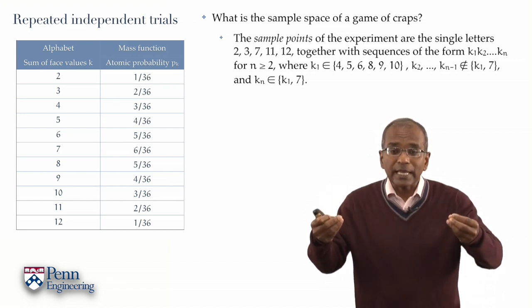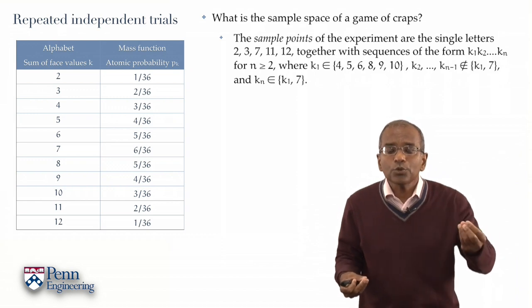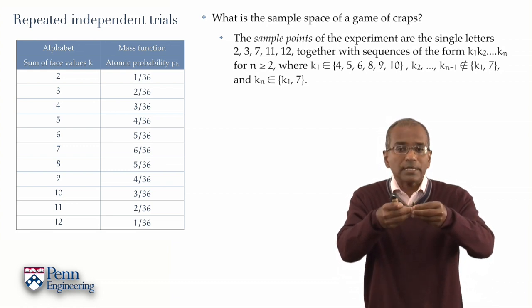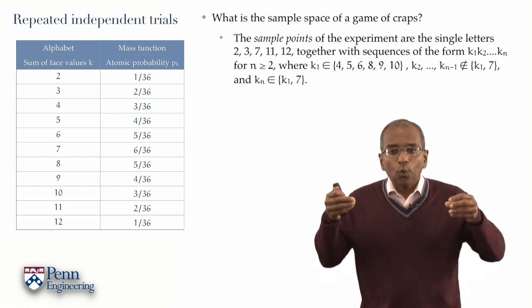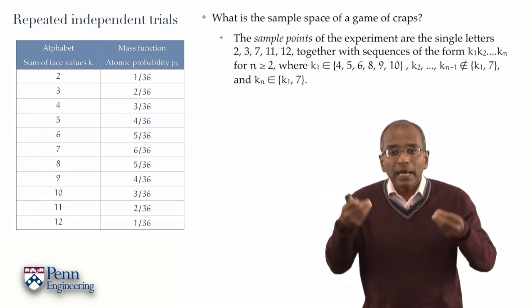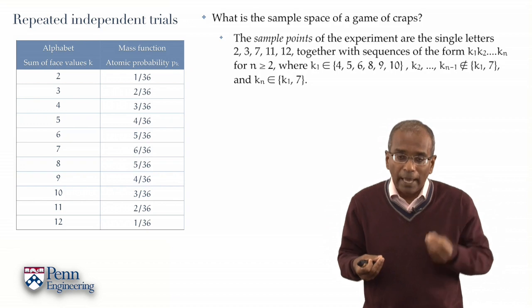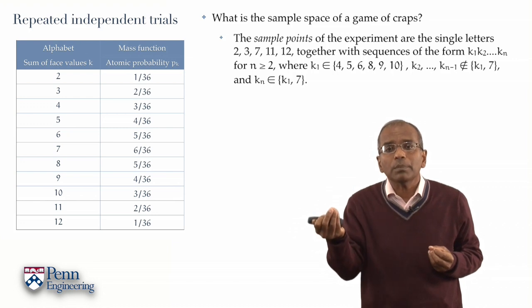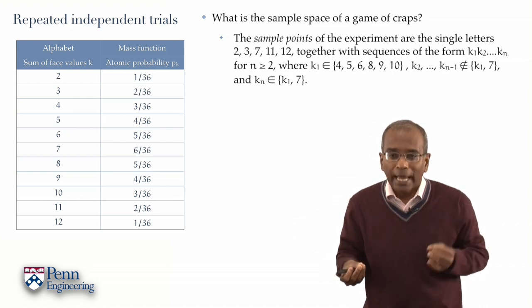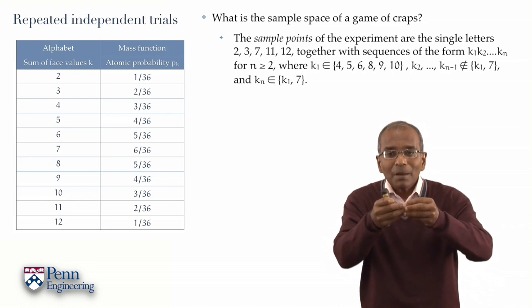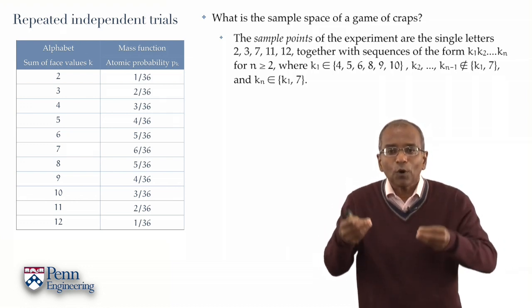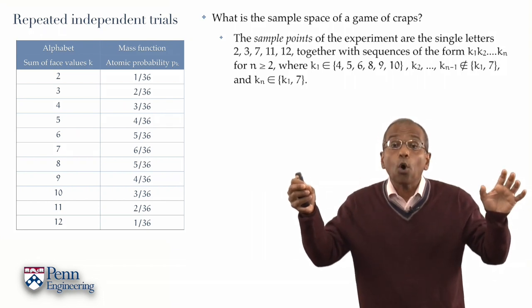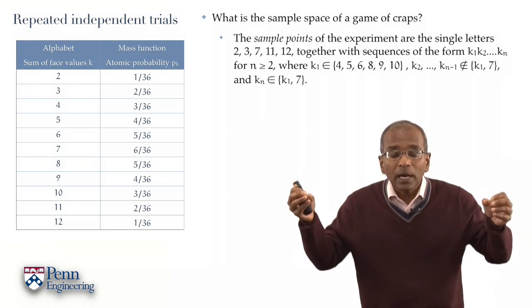But, if one throws 4, 5, 6, 8, 9, or 10, then the experiment continues, and we get a succession, a sequence of numbers. Let's say the game is continued, in this latter case, through n trials. We then obtain a succession, a sequence of numbers, k₁, k₂, k₃, through k_n, where n is 2 or larger. And, k₁ is one of the numbers 4, 5, 6, 8, 9, or 10. And, the remaining numbers are specified as follows. The final number, k_n, has to be either the starting number, k₁, or 7. In the former case, you win. In the latter case, you lose.